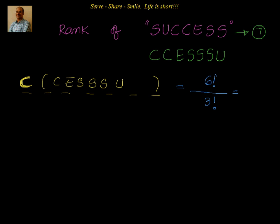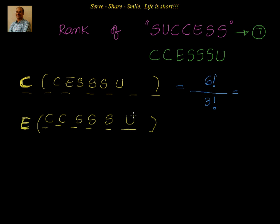Next, for words starting with E: E is fixed, and the remaining six letters are C, C, S, S, S, U. The number of arrangements is 6! divided by 2! (for two C's) and 3! (for three S's), giving 720 divided by 12, which equals 60 words starting with E. After C and E are exhausted, we move to S.